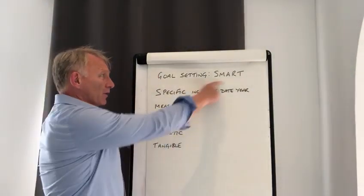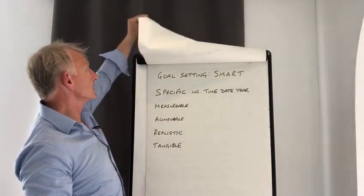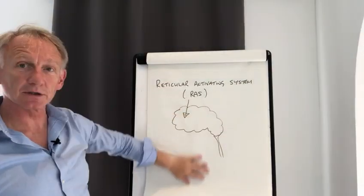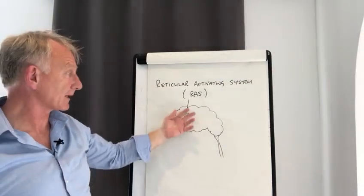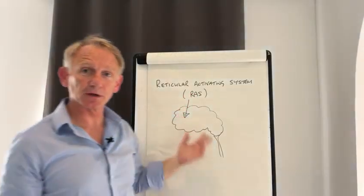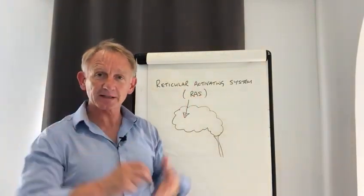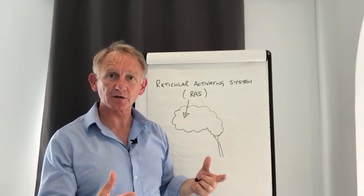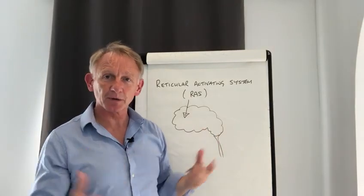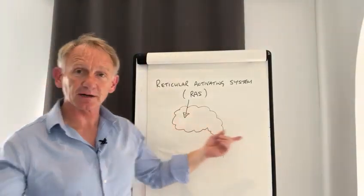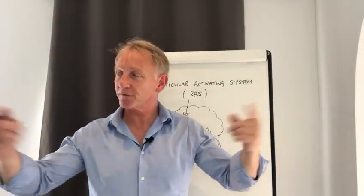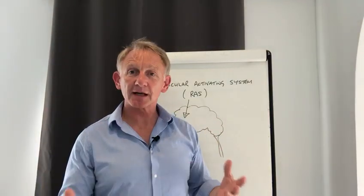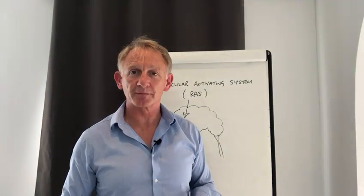Now, the more specific you get, the more SMART you get with your goal setting, guess what you can bring into play? The RAS. The RAS can help you. If you're feeding in things that are really specific about what you want to achieve and you attach emotion to it, then the RAS will start sifting the information in your environment and feeding it to you. And you never know what opportunities will come your way.